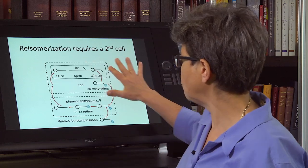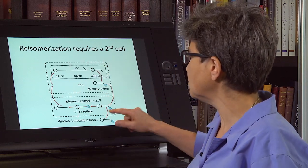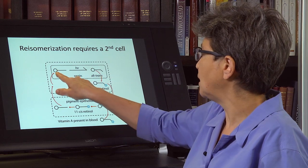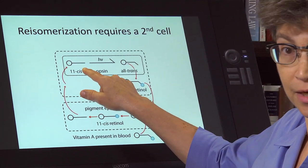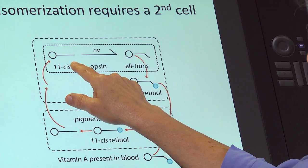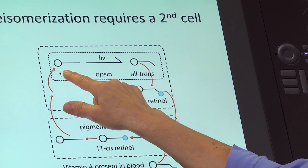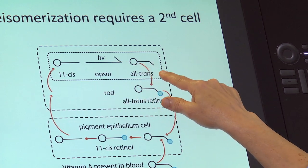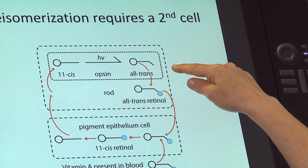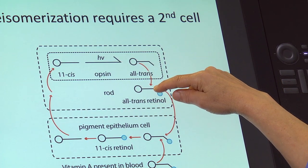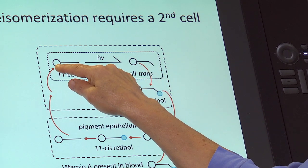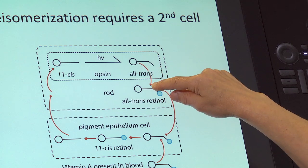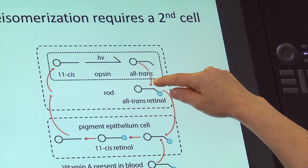And that's shown here. And what you see here is—here's the retinol. It's in the 11-cis conformation. Light comes in, and it turns all-trans. And when it turns all-trans, it cannot go back to 11-cis within the rod. It has to be shipped out. It has to be transported out.